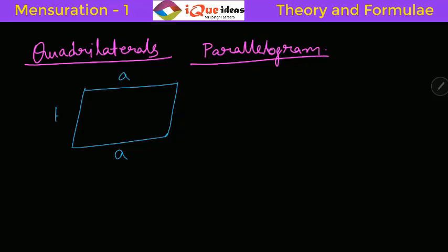So say this side is A, this side is A, this side is B, this side is B. Also this angle is equal to this angle and this angle should be equal to this angle. Opposite sides are equal, opposite angles are equal.